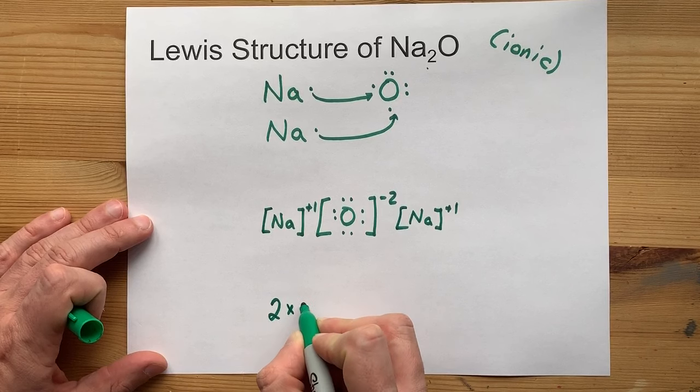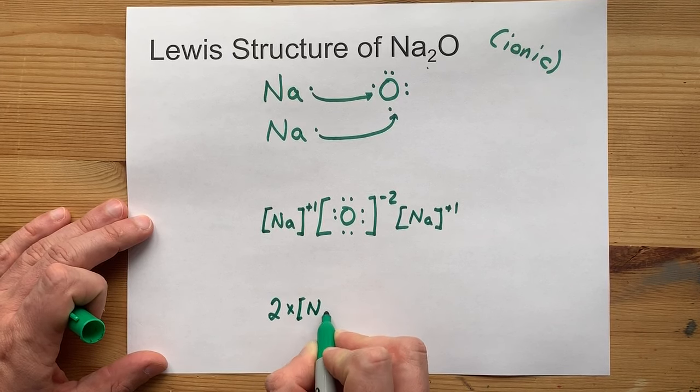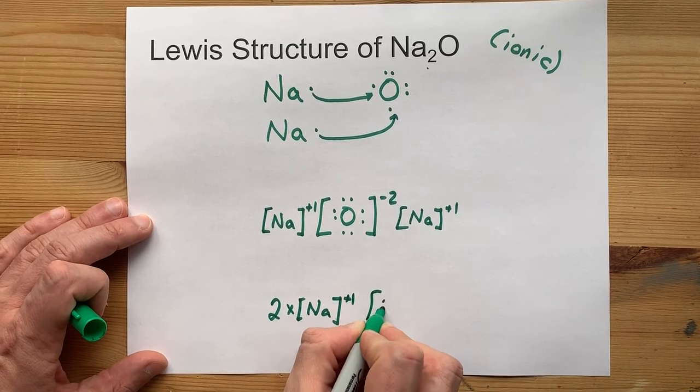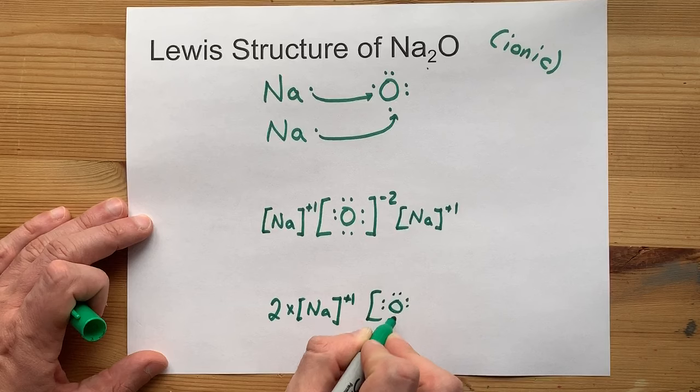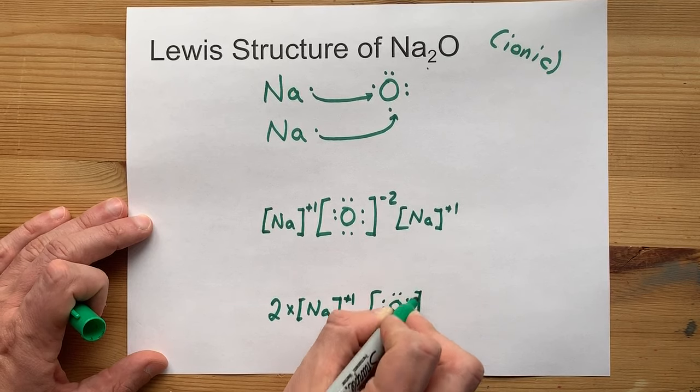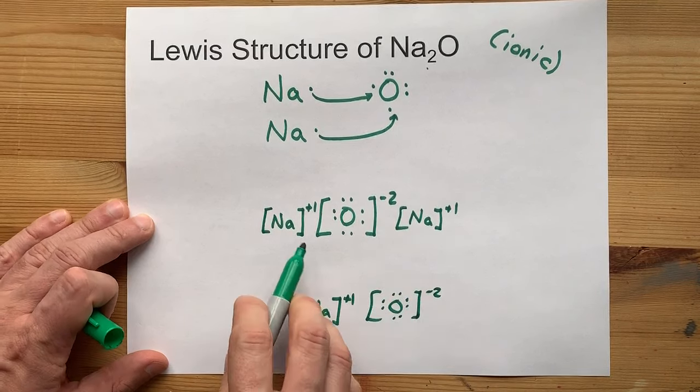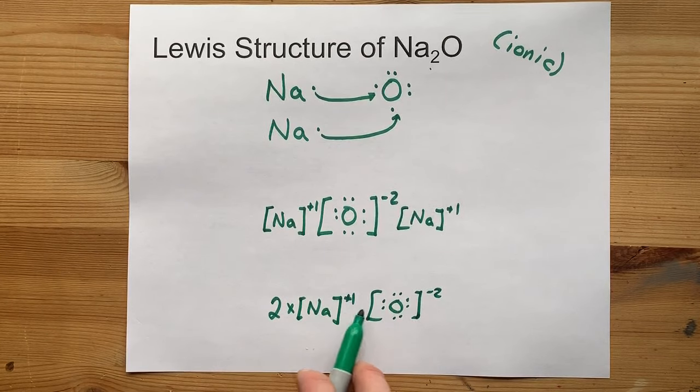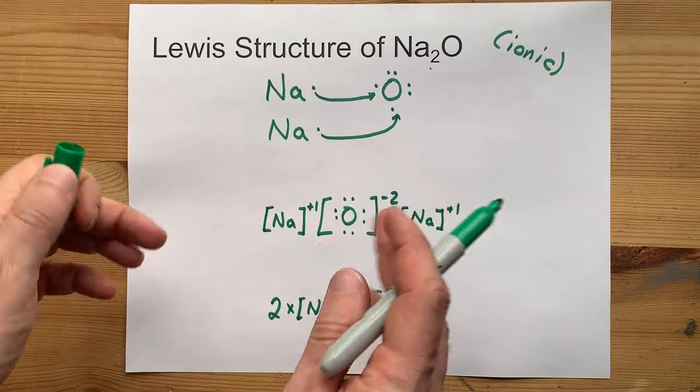Some teachers are going to allow you to write 2 times Na, just so you don't have to write it out twice. But you'll still have to write that oxygen with 8 valence electrons here, and it's minus 2 charge. This is my preferred Lewis structure for sodium oxide. This one might be acceptable. Best of luck to you.